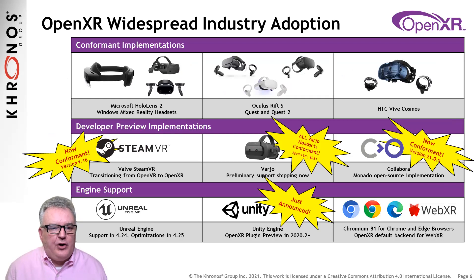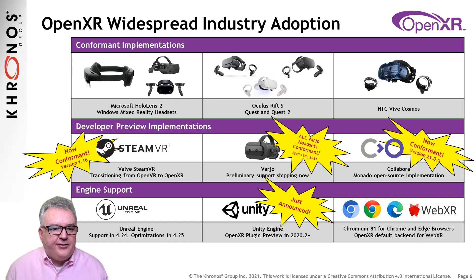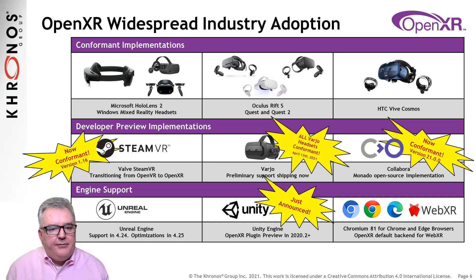OpenXR is rapidly gaining widespread adoption with conformant implementations, including the Rift S, Quest and Quest 2 from Oculus, the Vive Cosmos from HTC, the open-source Monado OpenXR implementation from Calabra, and most recently the entire range of Vario high-resolution VR headsets. Valve have publicly stated that all new SteamVR functionality will be exposed in OpenXR, rather than in their older proprietary OpenVR API. And Facebook has recommended that all game engines and applications use OpenXR, rather than its proprietary API.